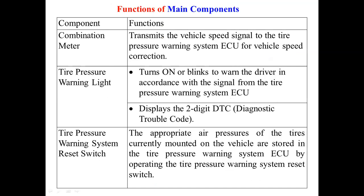The combination meter transmits the vehicle speed signal to the tire pressure warning system ECU for vehicle speed correction — because speed can be correlated with tire pressure. The tire pressure warning light turns on or blinks to warn the driver according to signals received from the ECU, and it displays a two-digit DTC (diagnostic trouble code) as part of the onboard diagnostic system. The reset switch stores the appropriate air pressures of the currently mounted tires into the ECU.